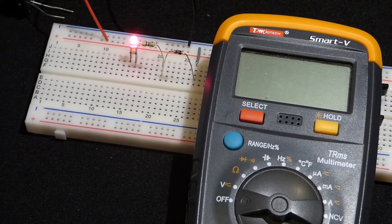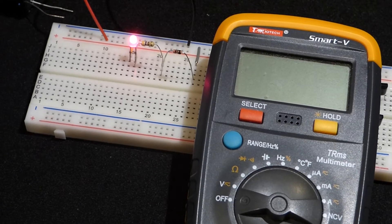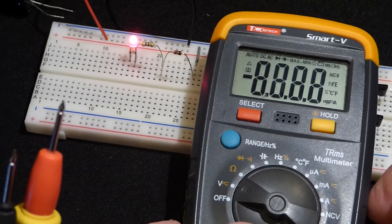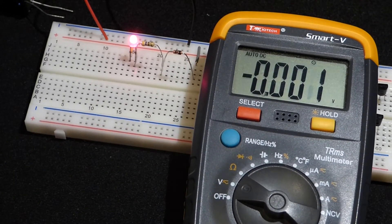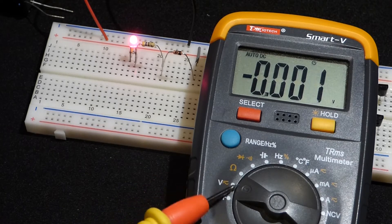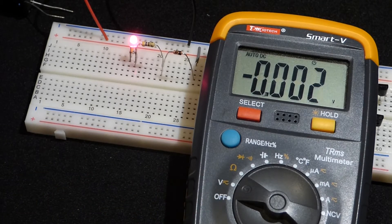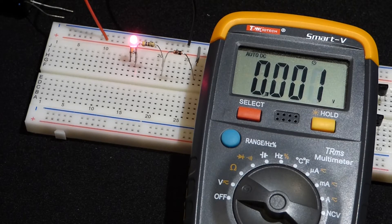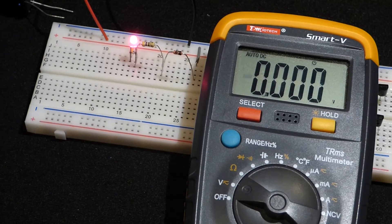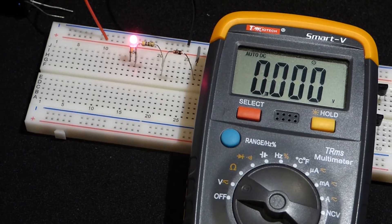So now to show what the Schottky diode does, what it's really used for, we're going to measure the voltage. This is an auto-ranging meter. All I have to do is set it to voltage and it takes care of everything else. There's other meters where you have to set it to a certain value to get a better reading but this meter takes care of that by itself.